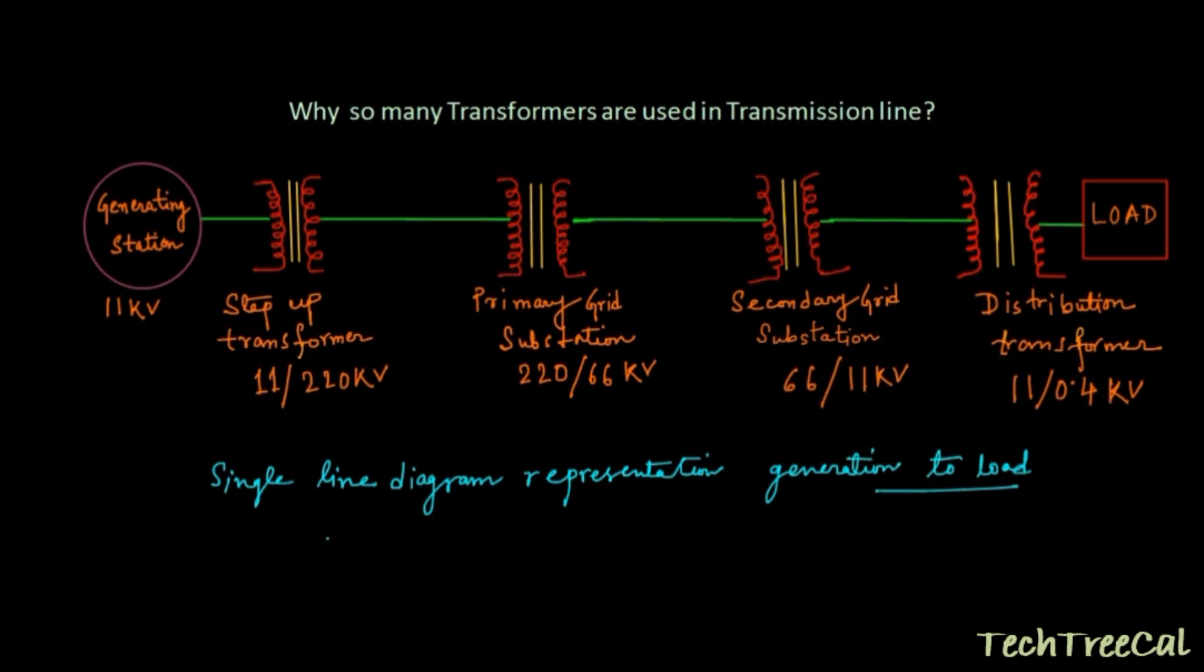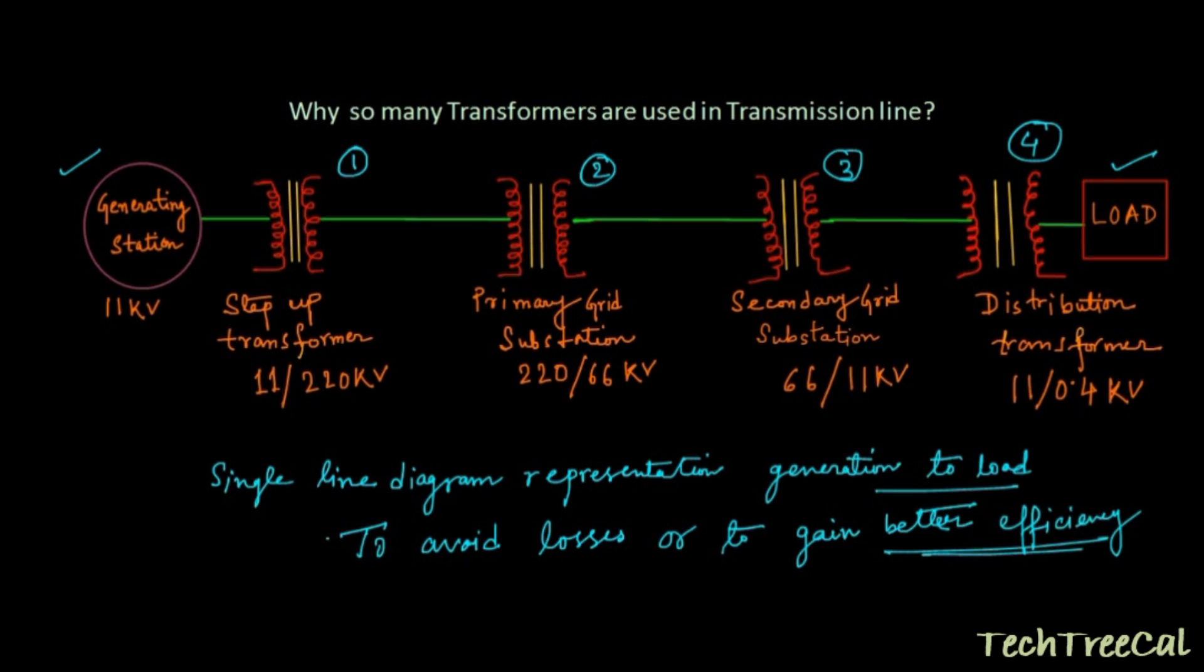See how many transformers are being used here: one, two, three, and four. Why this much amount of transformers? The simple answer is to avoid losses or to gain better efficiency.